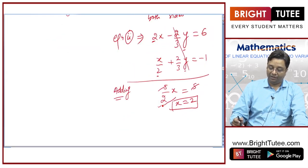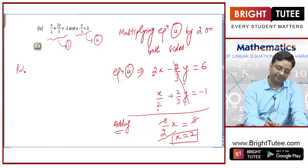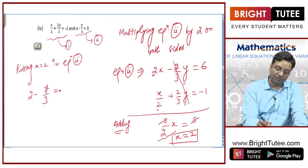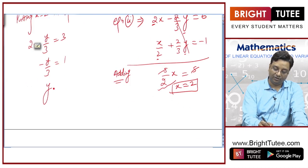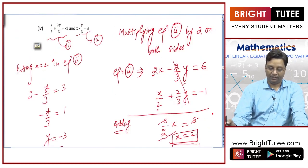Now, you can replace the value of x in any of the equations. Putting x equal to 2, y is equal to minus 3. So, y is equal to minus 3.